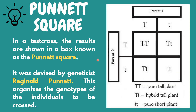In a test cross, the results are shown in a box known as the Punnett square. It was devised by geneticist Reginald Punnett. This organizes the genotypes of the individuals to be crossed. Based on the picture, parent 1 and parent 2 are both heterozygous tall. If we cross two heterozygous dominant individuals, the result will be one homozygous dominant tall, two heterozygous dominant tall, and one homozygous recessive short.